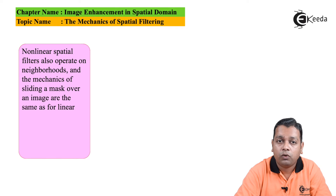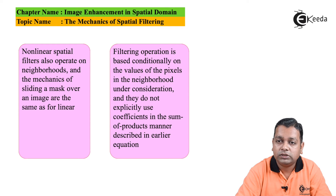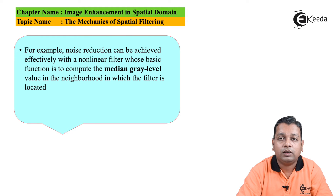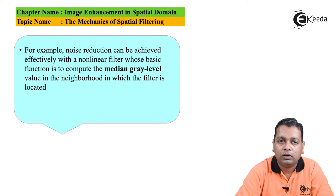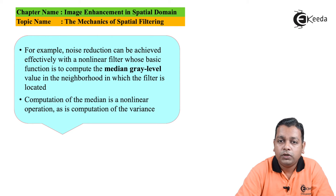There is a second approach: non-linear spatial filtering. These also operate on neighborhoods but without linearity. The mechanics of sliding a mask over the image is the same as in the linear case. However, the filtering operation is based conditionally on pixel values in the neighborhood and does not explicitly use coefficients in the sum-of-products manner. The best example of non-linear spatial filtering is median gray level filtering. For noise reduction, the median gray level value can be determined — and computing the median is a non-linear operation.